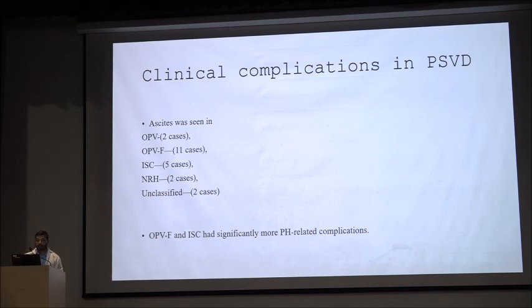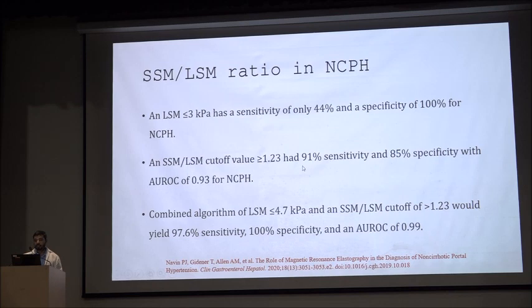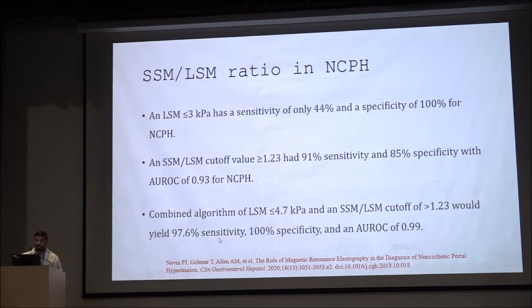In short-term course, ascites was seen more in OPV and ISC patients compared to NRH or unclassified. Regarding SSM to LSM ratio, a study in CGH showed that SSM to LSM ratio greater than 1.23 had 91% sensitivity and 85% specificity with an AUC of 0.93 for diagnosis of NCPH. Combined use of a ratio of 1.23 and LSM less than 4.7 achieved sensitivity up to 97.6% and 100% specificity.